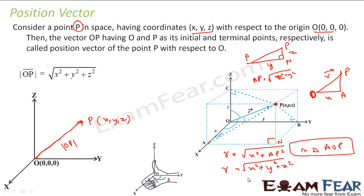What you get? R is nothing but root of x square plus y square plus z square. And that is what I have written. The magnitude of R. OP is my R vector. And the magnitude of this R vector is x square plus y square plus z square. And we will be using this formula very often. So please remember this.